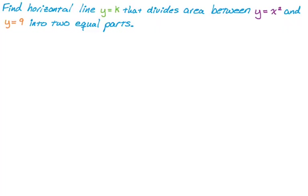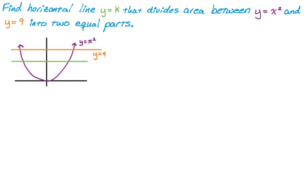I think it's really good to start with a figure of what's going on, as accurate as you can. Here's y equals x squared, here's y equals 9, a horizontal line, and those have nice intersection points at negative 3 and positive 3 for x. Then we're going to have another line y equals k, and this region up here and this region down here are going to have to have the same exact area.